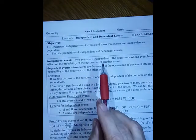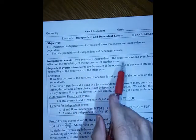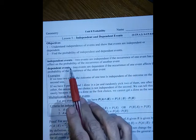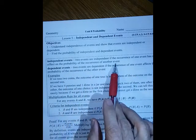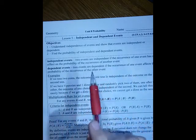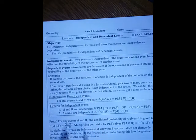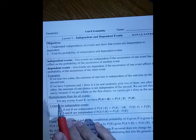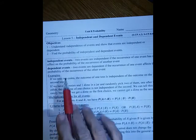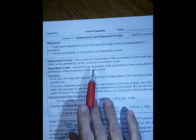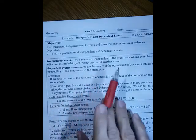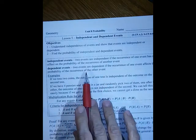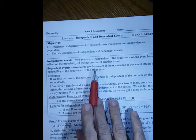Two events are independent if the occurrence of one event has no effect on the probability of the occurrence of another event. For example, if we toss coins, the probability that we get a head the first time and the probability that we get a head the second time are independent — they don't have any effect on each other. Dependent events are when the first one has an effect on the occurrence of the second one when we do things in order.